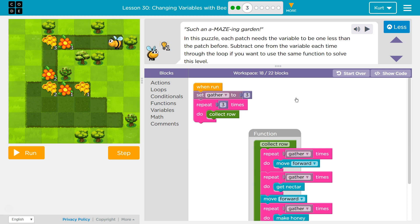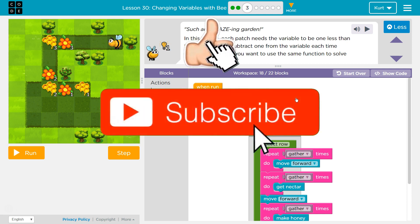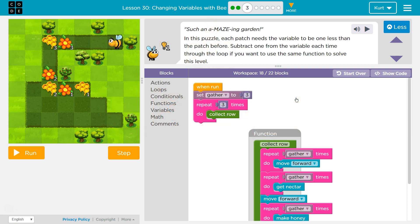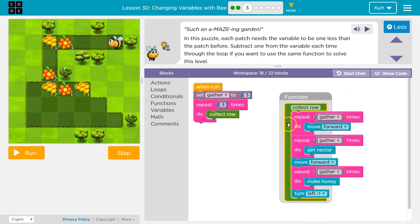Such an amazing garden. In this puzzle, each patch needs the variable to be one less than the patch before. Subtract one from a variable each time through the loop if you want to use the same function to solve this level. This seems tricky.